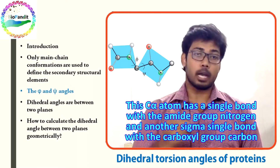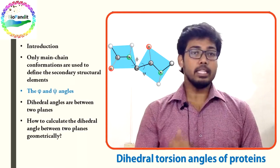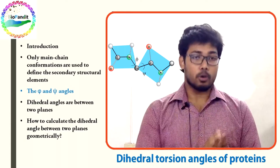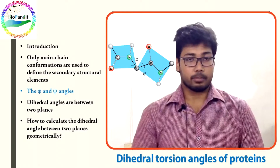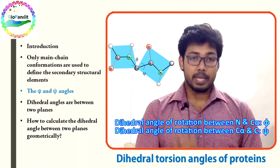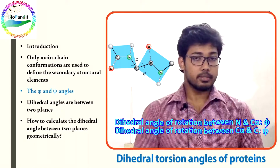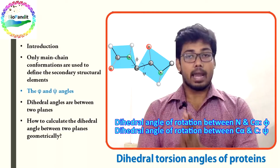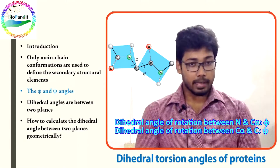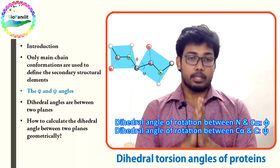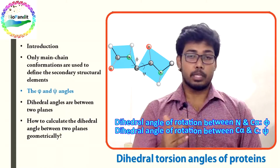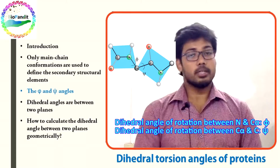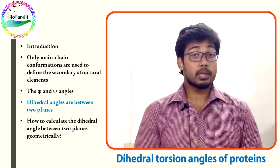Each amide plane can rotate around these bonds with respect to the C-alpha atom. To measure these rotations, the dihedral angle of rotation between the N and the C-alpha is named phi, and the dihedral angle of rotation between the C-alpha and the C atom is called psi.